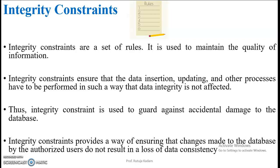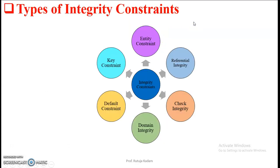Integrity constraints provide a way of ensuring that changes made to the database by authorized users do not result in a loss of data consistency. The types of integrity constraints are: entity integrity constraint, referential integrity constraint, check integrity constraint, domain integrity constraint, default constraints, and key constraints.